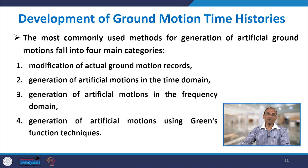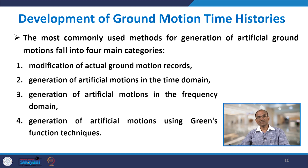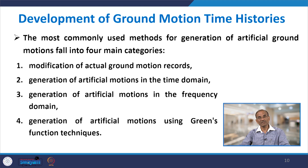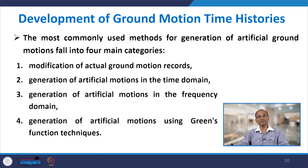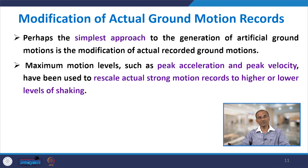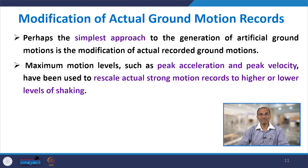For development of ground motion time histories, the most commonly used methods for generation of artificial ground motions fall into four main categories: modification of actual ground motion records, generation of artificial motions in the time domain, generation in the frequency domain, and generation using Green's function technique. The first and simplest approach is modification of actual recorded ground motion.